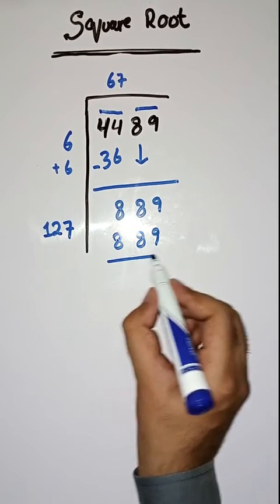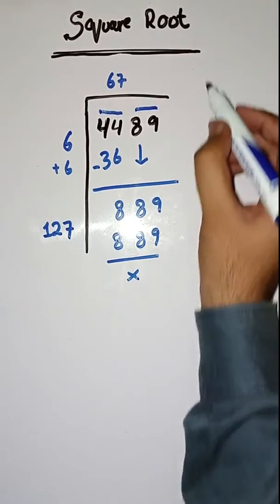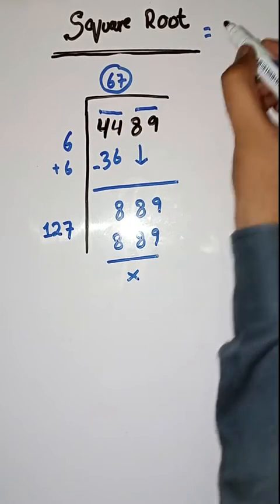Got it? So this is completely solved. So students, square root of 4489 is equal to 67.